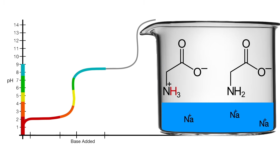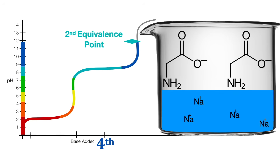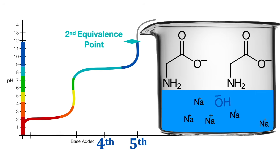Then more base titrant is added — in this example, a fourth base compound. The hydroxide base extracts the proton from the N-terminus of the remaining protonated amino acids, neutralizing it into water, reaching the second equivalence point. The second equivalence point is not like the first — this is not an isoelectric point because the result is not zwitterions. The full concentration of amino acids is now fully deprotonated and they have a net negative one charge. This is essentially the endpoint of amino acid titration because if more base titrant is added, there are no more protons to extract, so the base just saturates the solution and makes it basic.